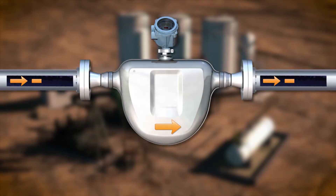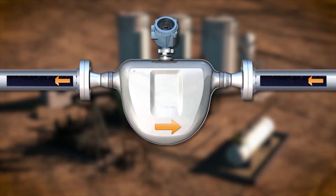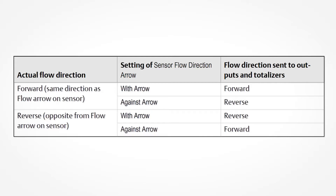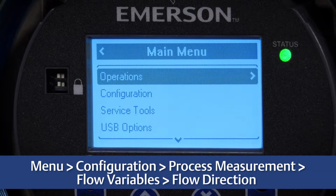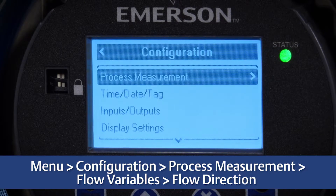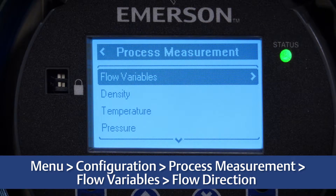The sensor works equally well with flow in either direction. The sensor flow direction arrow establishes a convention of forward flow to accommodate customers who need to define forward and reverse flow for process purposes. The sensor flow direction arrow interacts with milliamp outputs, frequency outputs, and totalizer direction to control how flow is reported by the outputs and accumulated by the totalizer. Using the display on the 5700 transmitter, select Menu > Configuration > Process Measurement > Flow Variables > Flow Direction.